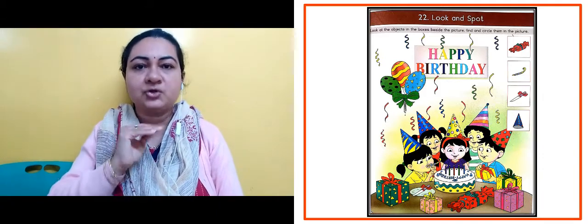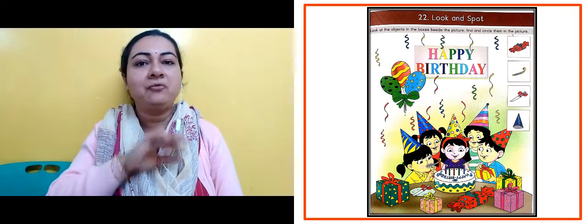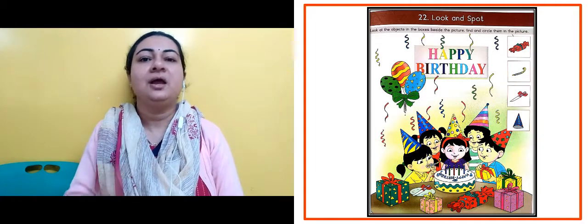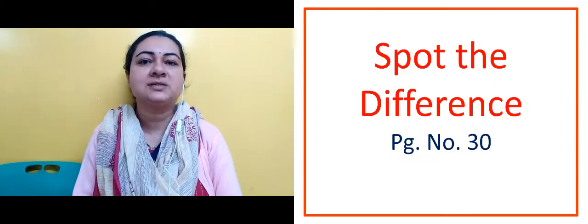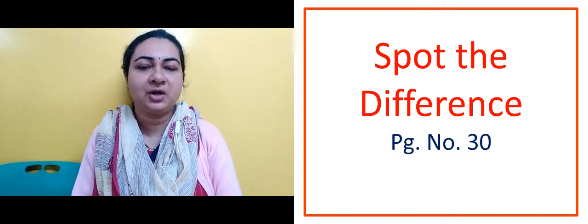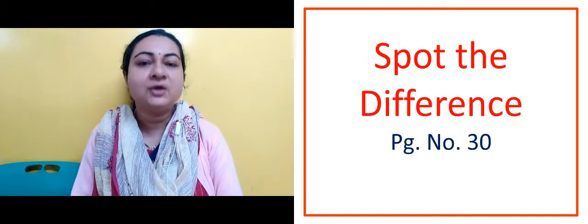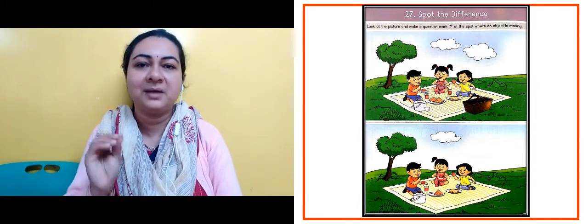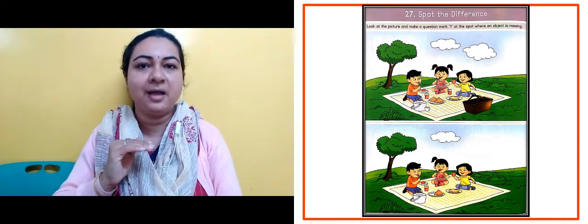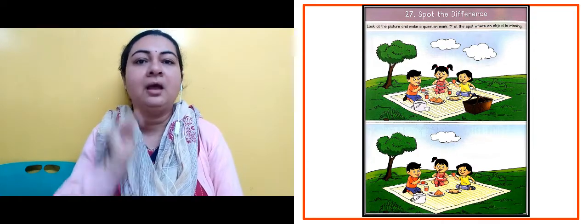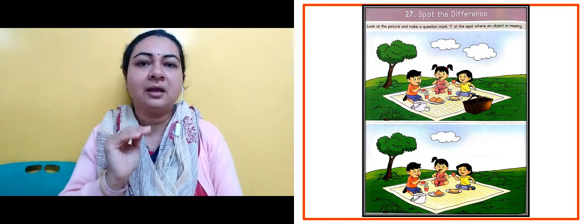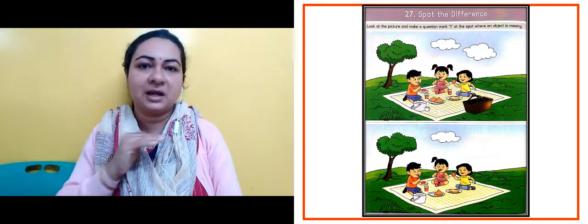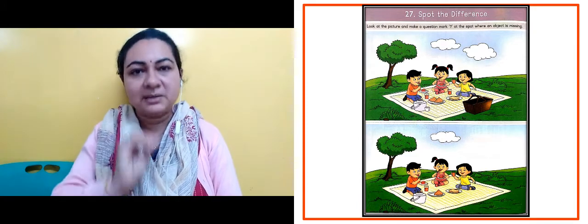Now the next slide is showing us 'Spot the Difference' on page number 30. As you can see in the next slide, you can see children in the garden and there are two pictures. They look similar, but there are a few things missing in the second picture.